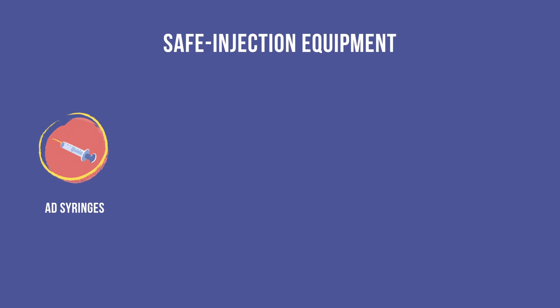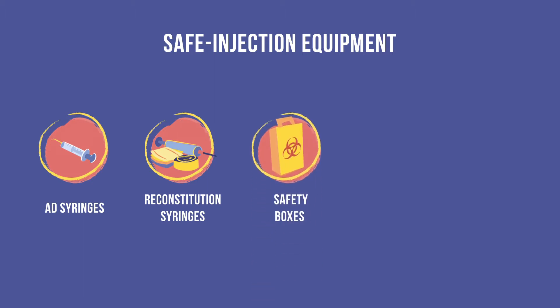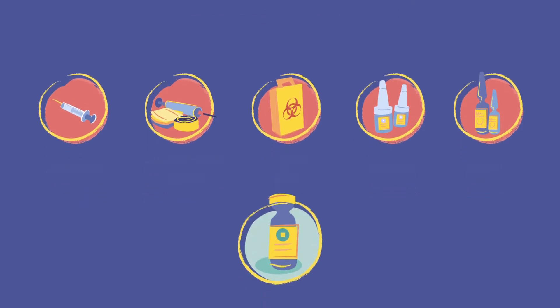Safe injection equipment consists of auto-disable (AD) syringes, reconstitution syringes, safety boxes, and any droppers for oral vaccines. At higher levels and in certain countries, diluents may be considered safe injection equipment if they do not require refrigeration. WHO and UNICEF recommend that managers order this equipment when they order vaccines — a policy called bundling — so that the vaccines and safe injection equipment are always available together.